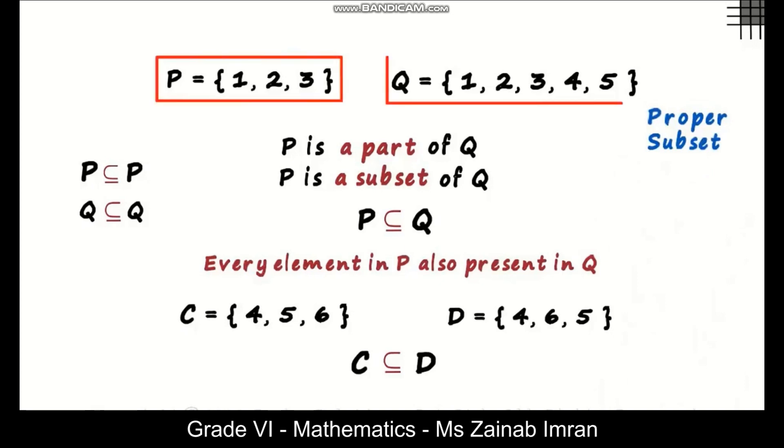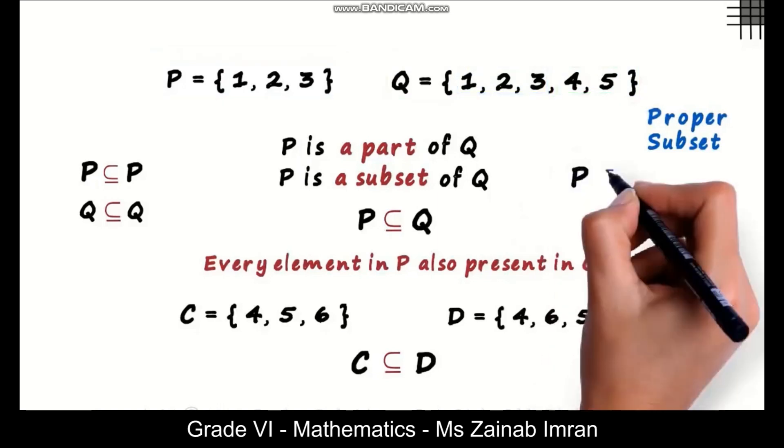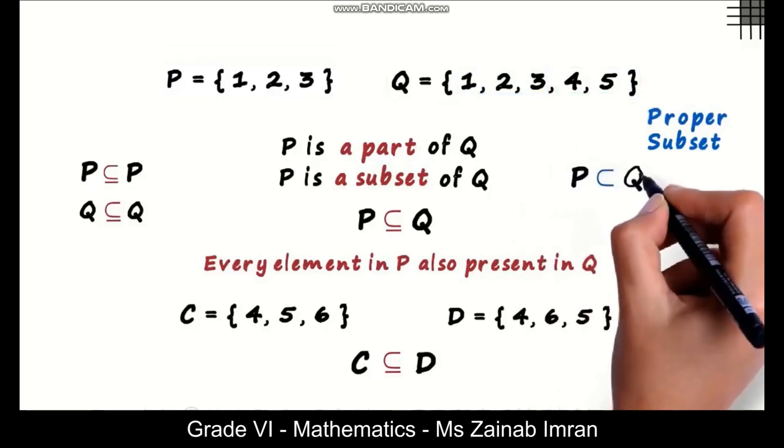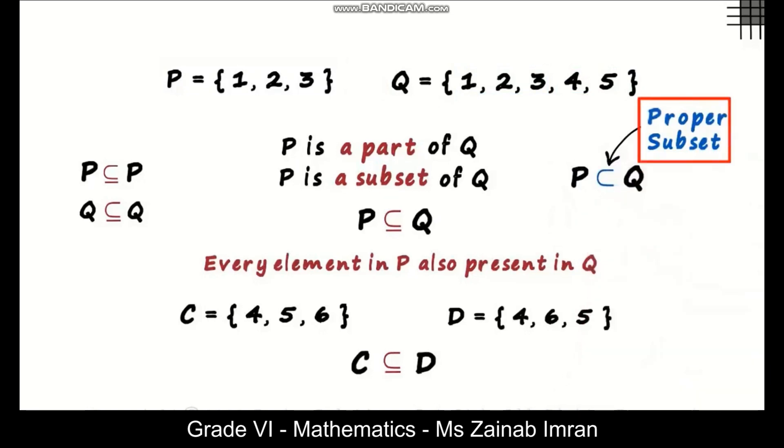Look at sets P and Q. Set P is a part of set Q but there is at least one element in set Q which is not present in set P. We say that set P is a proper subset of set Q. This sign indicates proper subset.